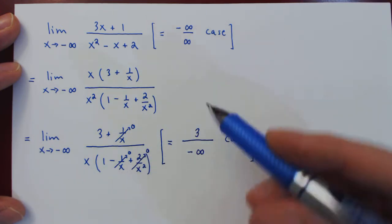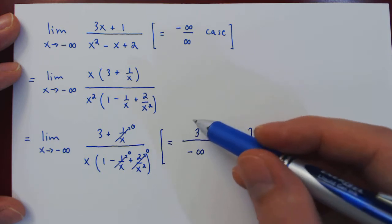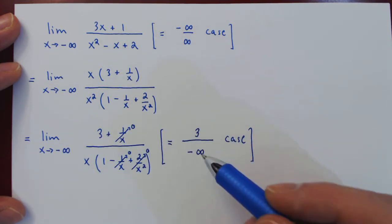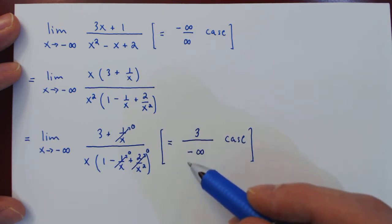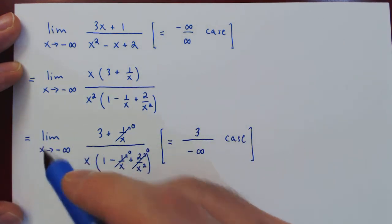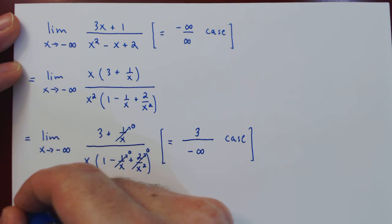So if you have a fraction where the numerator is constant, always equal to 3 or very close to 3, and the denominator gets larger and larger—even though negative—the fraction will get smaller and smaller. Therefore, the limit is equal to zero.